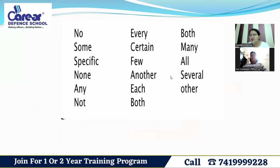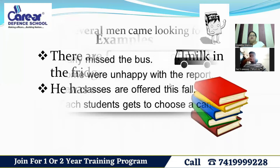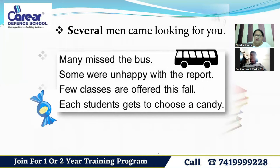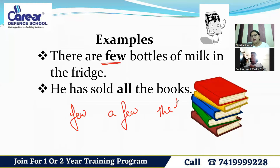Words related to indefinite numeral adjectives include: no, some, none, any, not every, certain, few, one, other, each, both, many, all, several, and others. For example: 'There are few bottles of milk in the fridge.' Here 'few' is an indefinite numeral adjective.